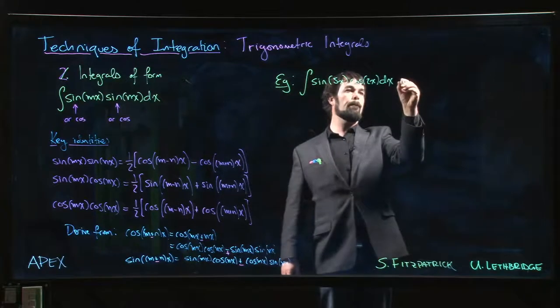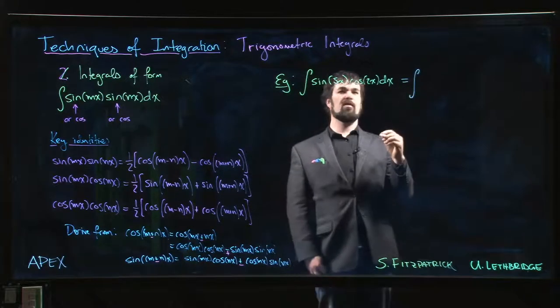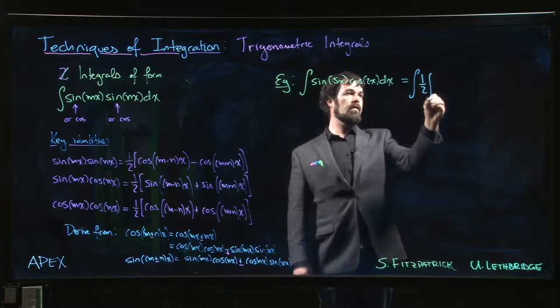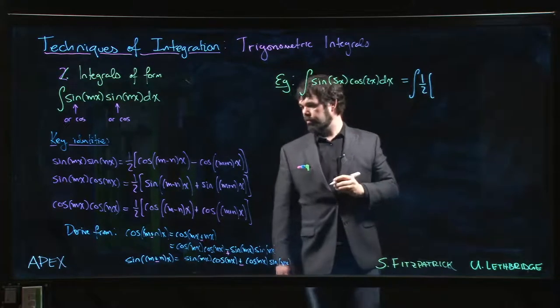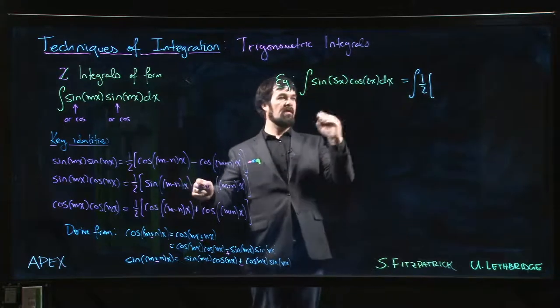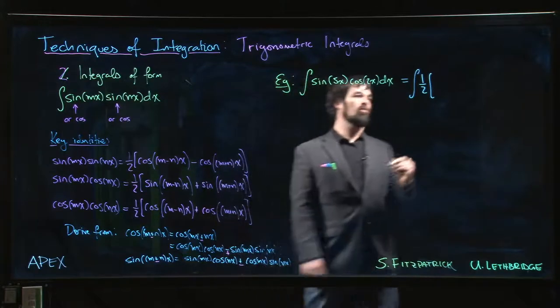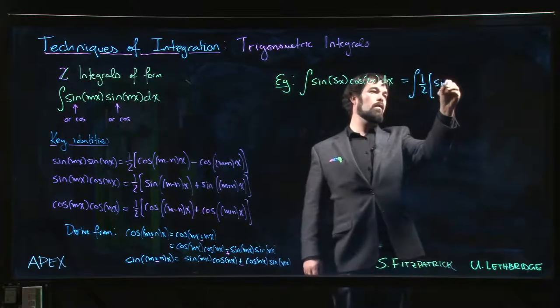So all we have to do is apply this identity and say okay, so it's going to be one-half. We're going to do m minus n: 5 minus 2 will be 3, so it's going to be one-half sine 3x.